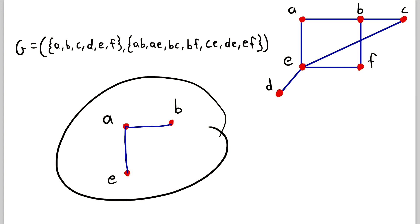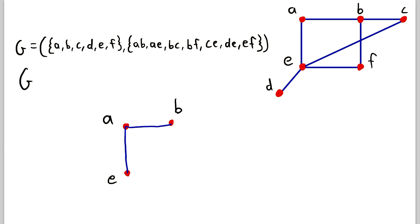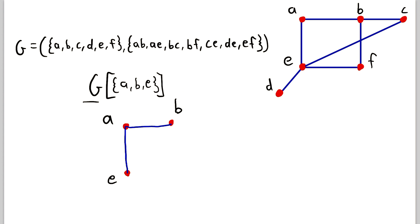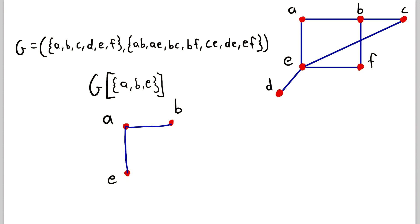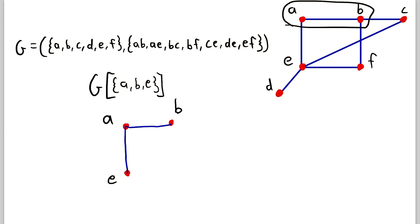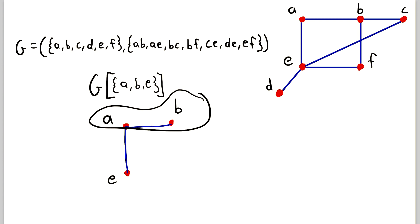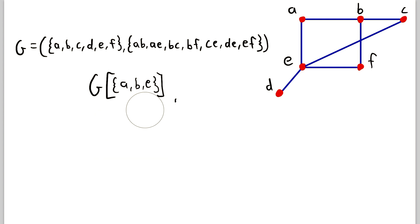We could denote this vertex-induced subgraph of G with this notation, which refers to the subgraph of G induced by the vertices A, B, and E. This tells us our graph will contain those three vertices, and since it is a vertex-induced subgraph, we have to include any edges joining these three vertices that exist in the original graph G. So since A and B are joined by an edge in G, they have to be joined by an edge in this vertex-induced subgraph, and similarly for A and E.